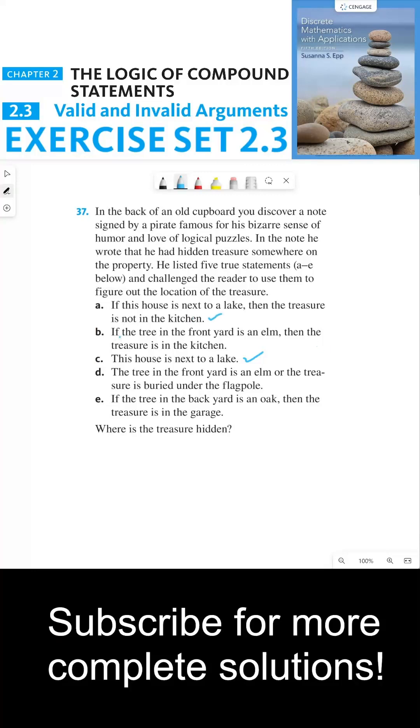So if we read part B, this says if the tree in the front yard is an elm, then the treasure is in the kitchen. But we already know that the treasure is not in the kitchen. And so by modus tollens, we know that the hypothesis of part B is false because the conclusion of part B is false based on part A. So this means that the tree in the front yard is not an elm.